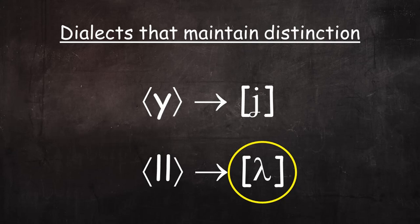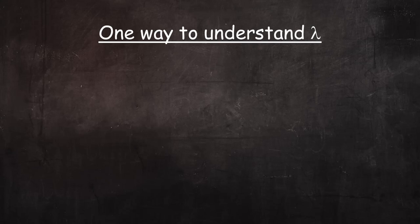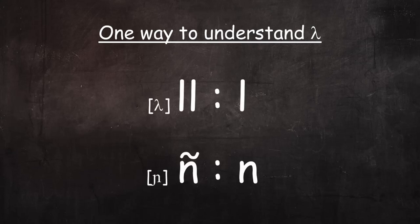Linguists and native speakers have a whole set of vocabulary for this topic, but all that terminology won't be introduced here. One way to think of elie is this: elie is to L what eñe is to N. If you're familiar with Spanish eñe, it shouldn't be too hard to imagine how the elie is pronounced.